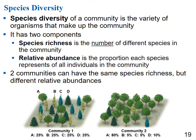Species diversity has two components: species richness, which is the number of different species in a community, and relative abundance, which is the proportion each species represents of all individuals. Two communities can have the same species richness but different relative abundances. Looking at communities one and two: both have trees A, B, C, and D — the same species richness of four — but community one has more even distribution, so it has more diversity.